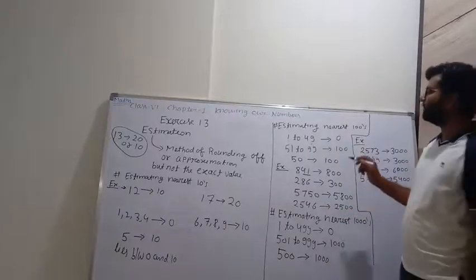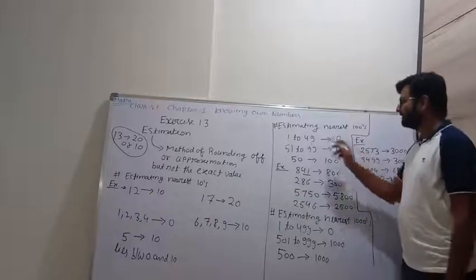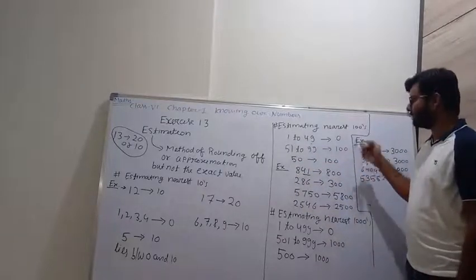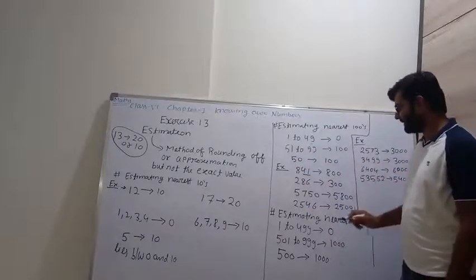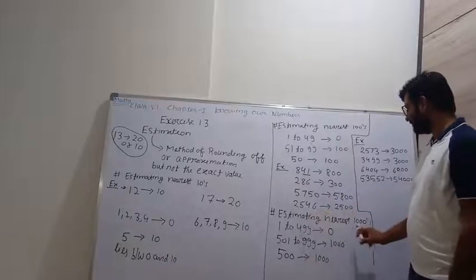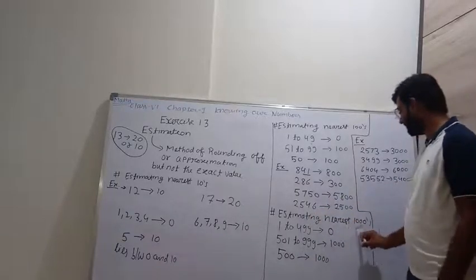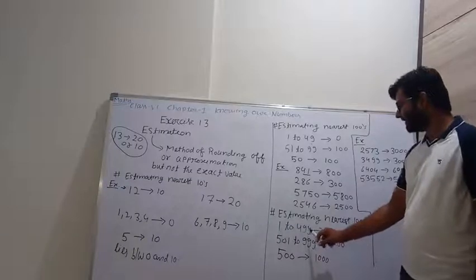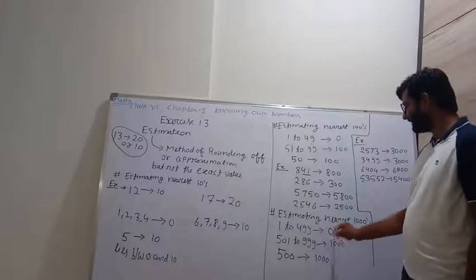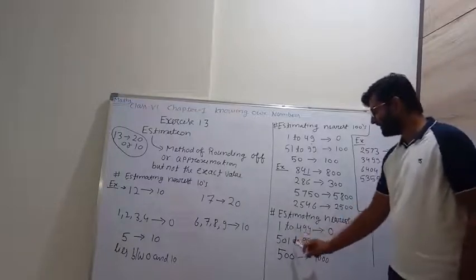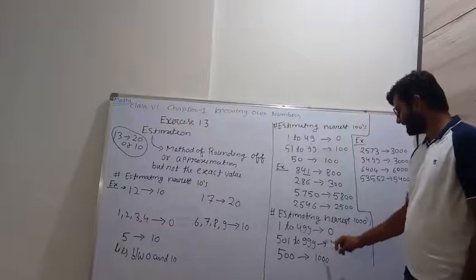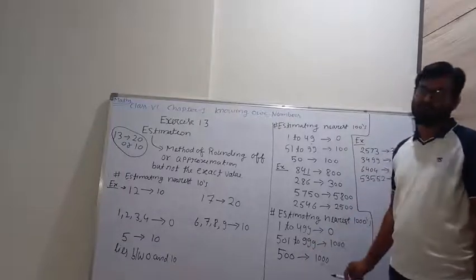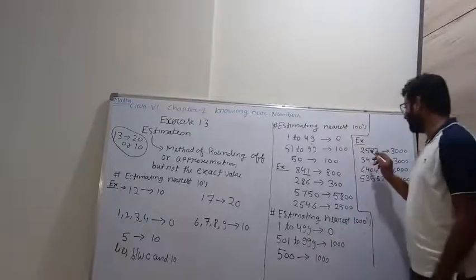It is a very simple method. We have to follow this and convert to approximation. Similarly, for estimating to the nearest 1000: 1 to 499 is converted as 0 (previous value), and 500 to 999 is converted as 1000 (next value). And 500 is also converted as 1000.